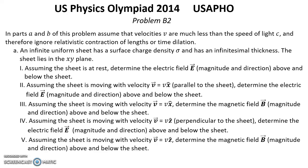Problem B2. In parts A and B of this problem, assume that the velocities V are much less than the speed of light C, and therefore ignore relativistic contraction of length or time dilation. Part A: An infinitely uniform sheet has surface charge density sigma and has infinitesimal thickness. The sheet lies in the XY plane.